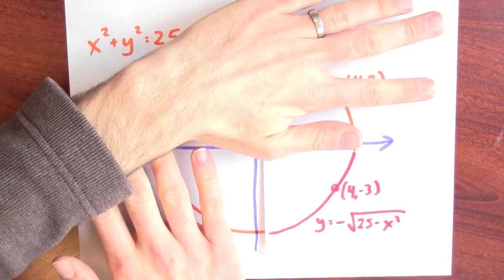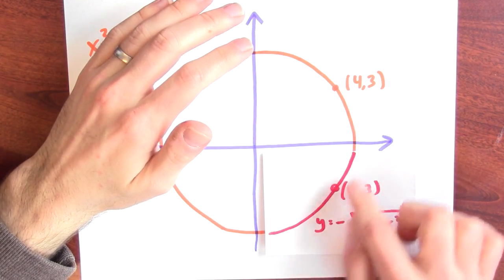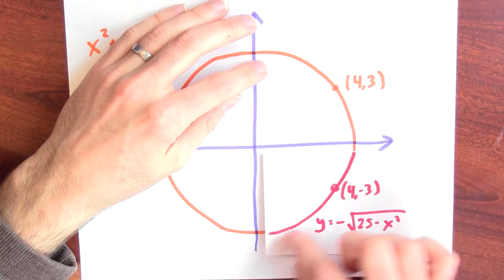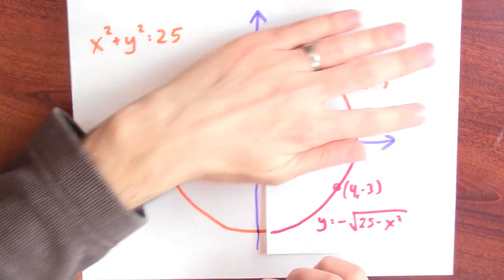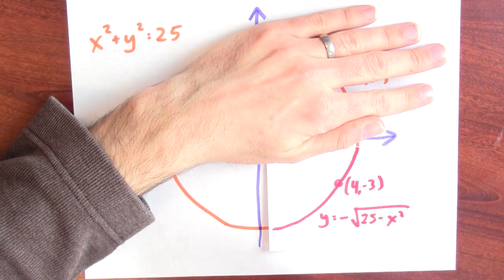If I ignore the rest of this and I'm just looking at this curve here, this curve by itself is a function. If I ignore this, it satisfies the vertical line test.